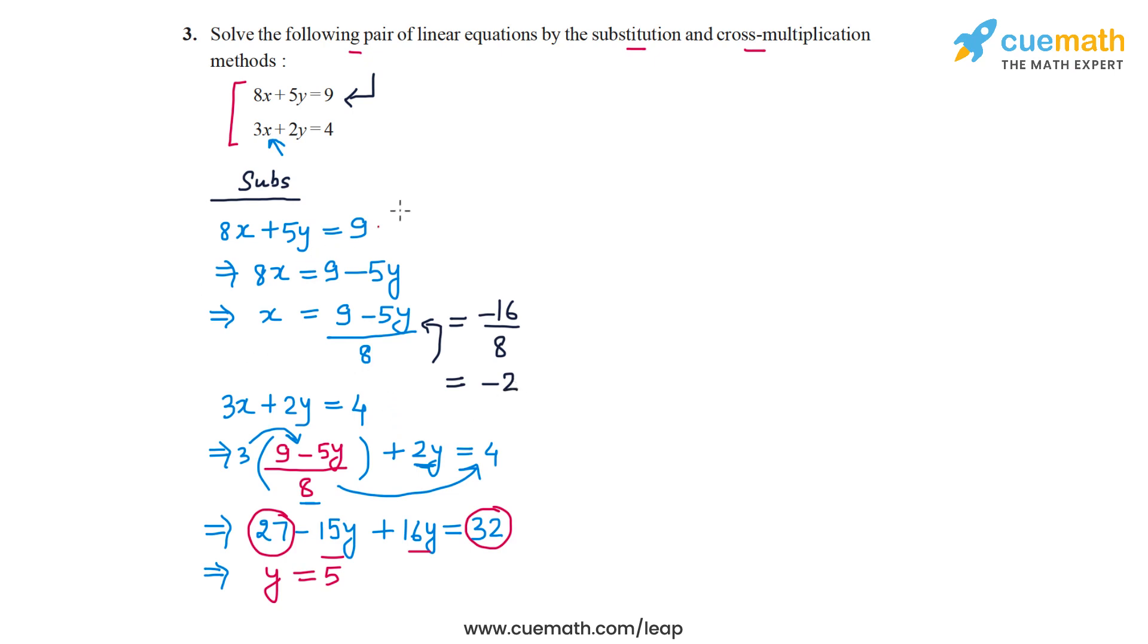So the solution using substitution that we get is x is equal to minus 2 and y is equal to 5. Now let's solve the same pair of equations using cross multiplication.